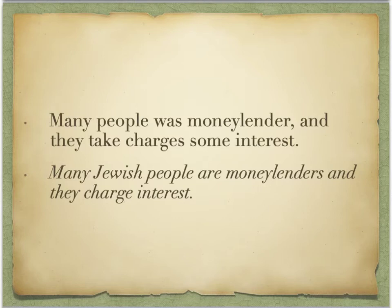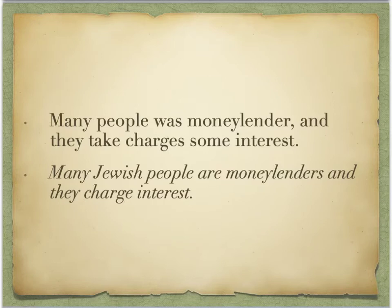Here's another example. We've got a number of errors with the problem of number. We have 'people,' which is plural, and then 'was,' which is the wrong verb for plural. Then we have 'money lender,' which is singular, and then 'they,' which is plural. Then there's a verb error: 'take charge' means to control something, but here we don't want 'take' — we want 'they charge interest.' I changed the past tense to the present tense and the singular things to plural. So: many Jewish people are money lenders and they charge interest.